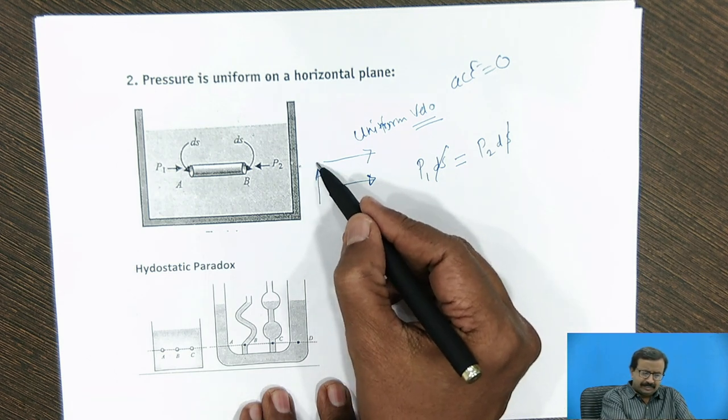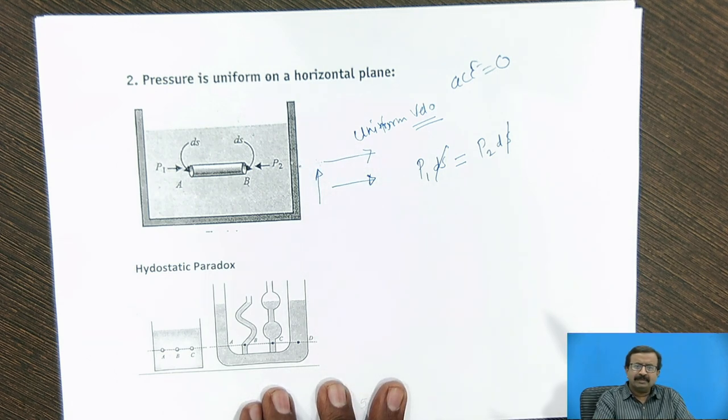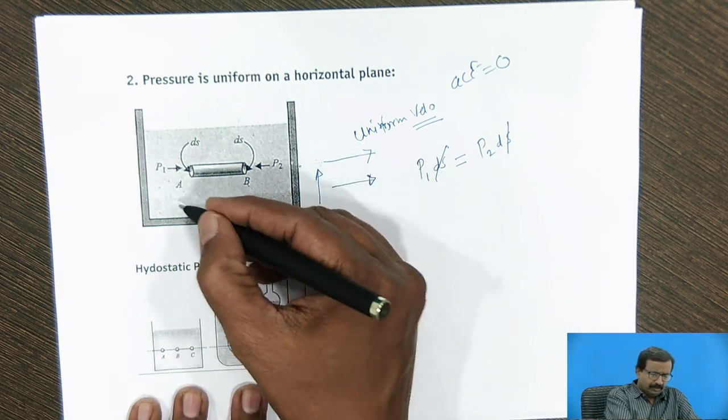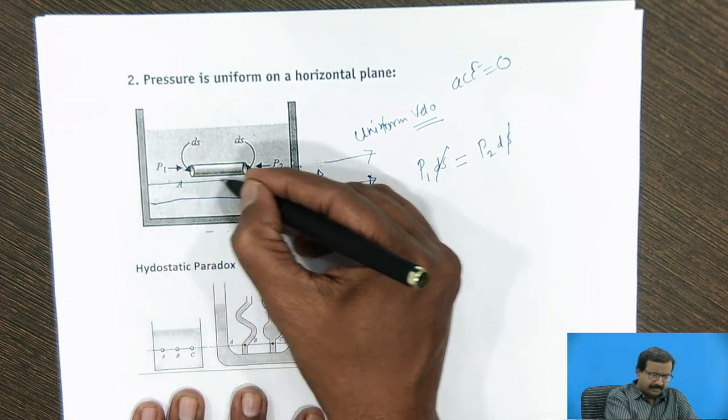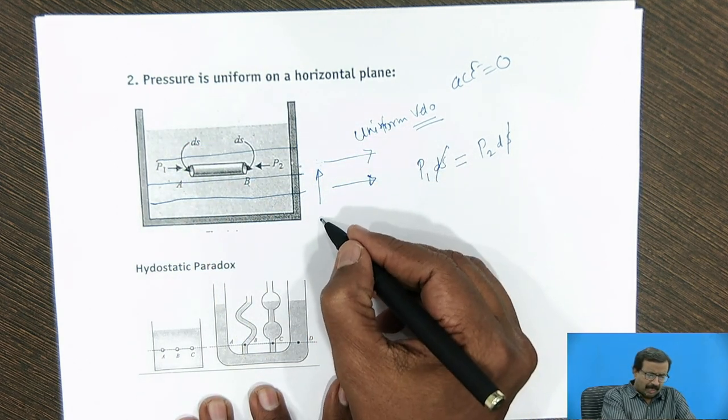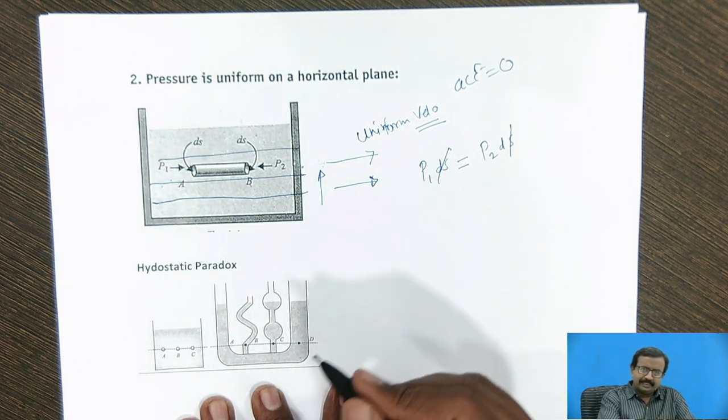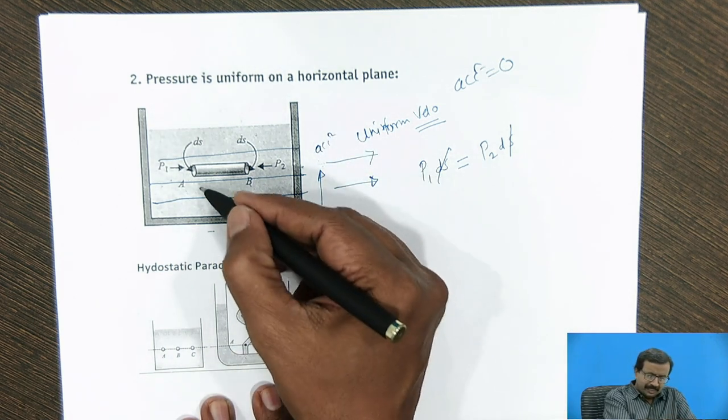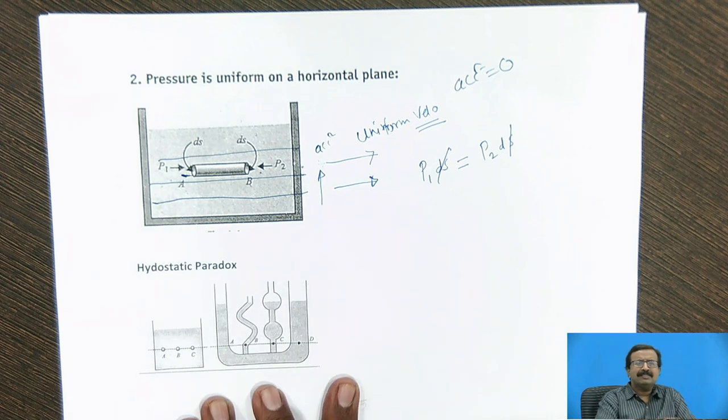Similarly, assume that this is moving with uniform velocity. When a body moves in uniform velocity, it is as if it is in a frame of reference static condition. So in that situation also, there is no change in the pressure along the horizontal line. So these are the isobaric lines. Similarly, if I have an accelerated motion in the vertical direction, if I have acceleration in the vertical direction, still my pressure in the horizontal direction is same.